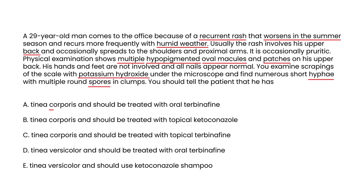You have to figure out whether it's tinea corporis or tinea versicolor. Remember, corporis is another type of fungal rash, but it appears as circles with a slightly raised and erythematous perimeter. This vignette is describing hypopigmented macules, which of course is very characteristic of tinea versicolor. He also tells you that it worsens in the summer, which is also part of the history.